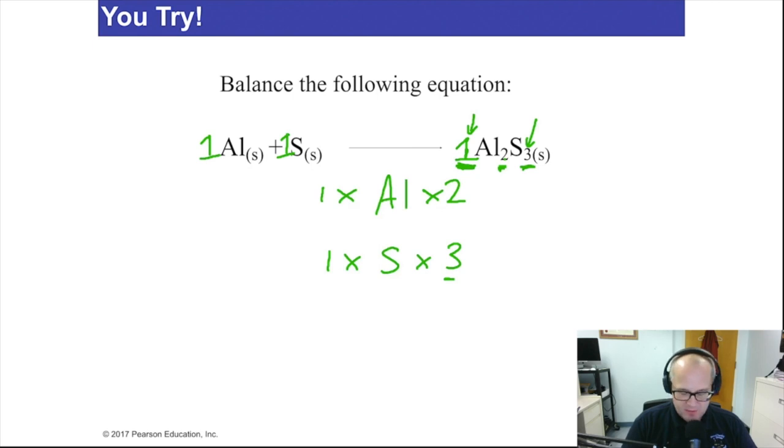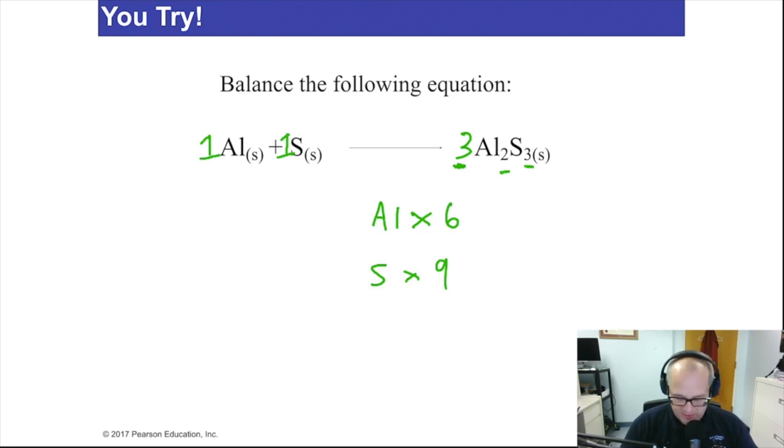Whatever number's up here, you multiply by that number, and that's the number of aluminums. Whatever number's right here, you multiply by three, and that's the number of sulfur. Are you with me so far? That's how this is working.